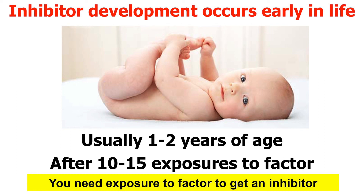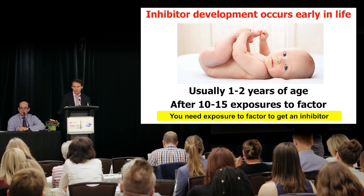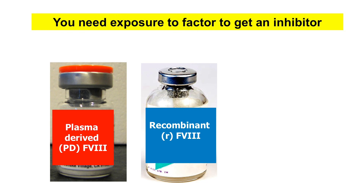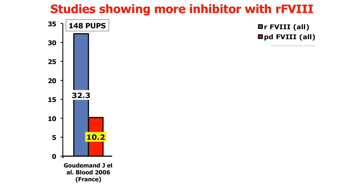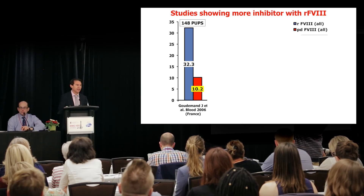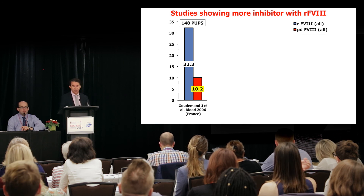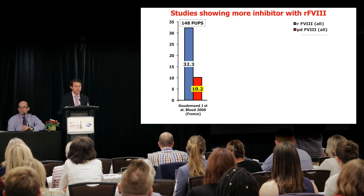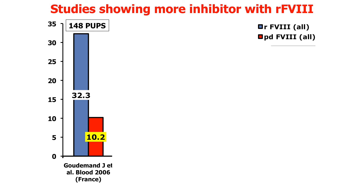Inhibitor development occurs early in life, usually when a child is one to two years of age and after about 10 to 15 exposures to factor. But you need exposure to factor to get an inhibitor. Because you need that exposure, does it make a difference what factor you get exposed to early in life? Particularly, does it make a difference if you get a plasma-derived factor versus a recombinant factor? Beginning around 2006, there have been many studies showing a higher risk of inhibitor development with recombinant factor VIII. Shown in blue is the inhibitor incidence with recombinant factor VIII from various studies, and in red is the incidence with plasma-derived factor VIII.